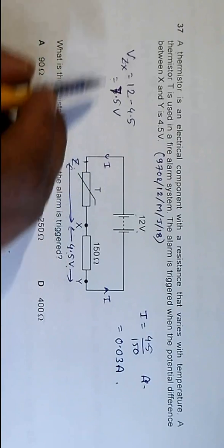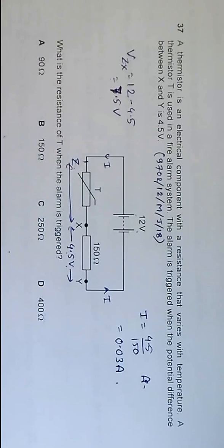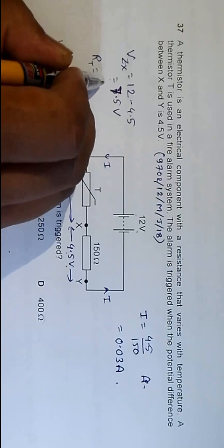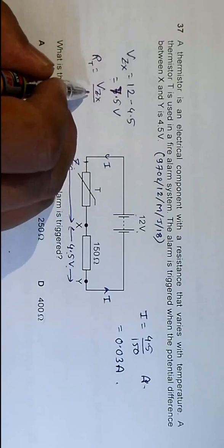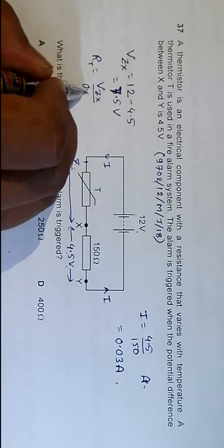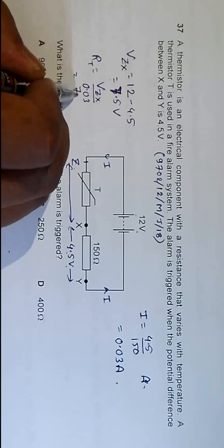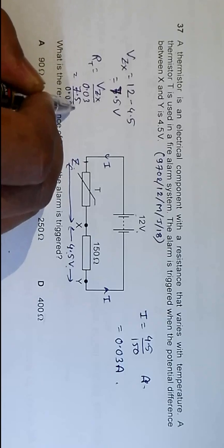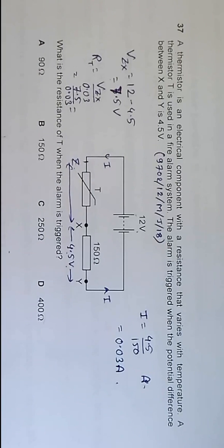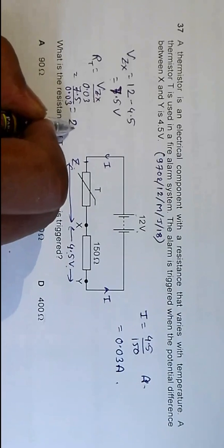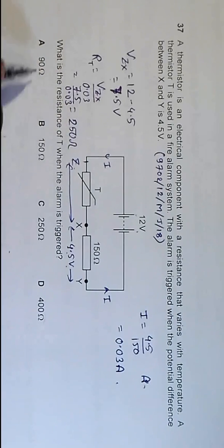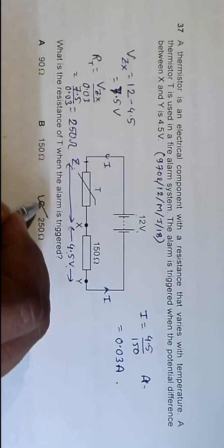And we have VJdx of 7.5 volts. So at that time, the resistance of the thermistor is equal to VJdx divided by this current, 0.03. So it equals 7.5 by 0.03, and that's equal to... let me do the calculations: 7.5 divided by 0.03 equals 250 ohms. The resistance is 250 ohms. Going to the choices, choice C has the correct answer.